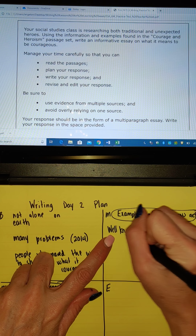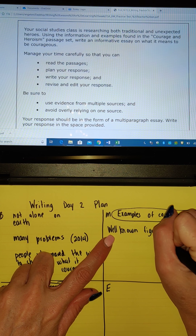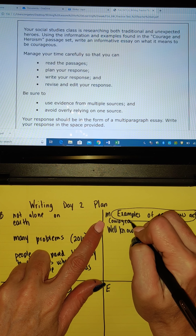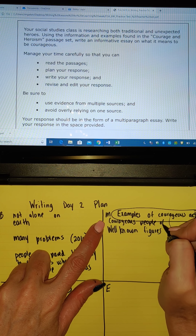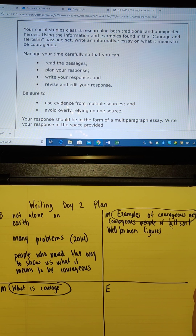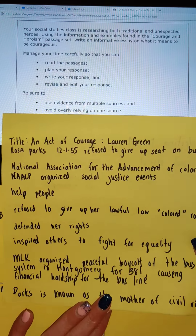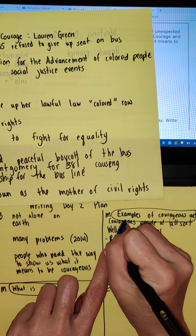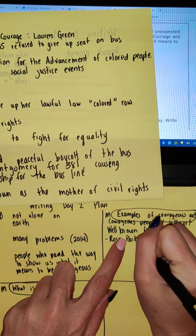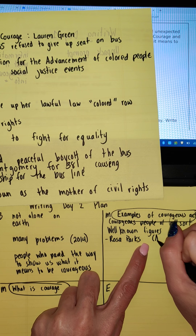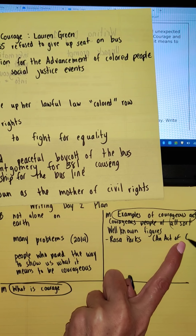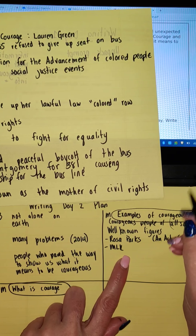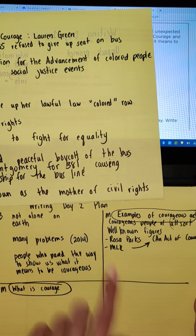Well-known figures. Courageous people of all sorts. So I've got my NAACP, or my Rosa Parks. Rosa Parks comes from 'An Act of Courage,' and MLK is in the same text.